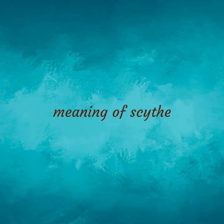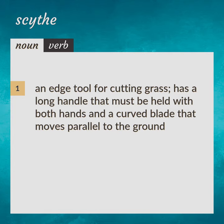Meaning of Scythe. An edge tool for cutting grass. Has a long handle that must be held with both hands and a curved blade that moves parallel to the ground.